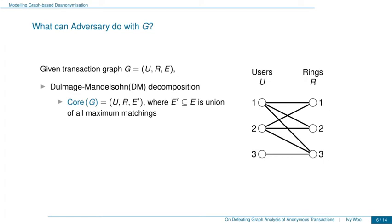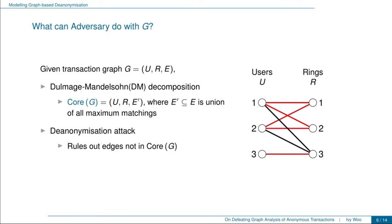So what can a graph-analyzing adversary do with a transaction graph G? We consider the DM decomposition, which decomposes G into two parts. The first part is called the core of G, denoted (U, R, E'), which is a subgraph of G where E' is the union of all maximum matchings in G; the second part is everything else. In the example on the right, the red edges are all edges in core(G). A graph-based de-anonymization attack is simply to rule out edges not in core(G), which cannot correspond to a true signer-signature assignment. For instance, since edges (1,3) and (2,3) are not in core(G), we conclude that user 3 must have been the real signer of ring 3. If G does not equal core(G), then some users will have decreased anonymity in the sense that their effective ring size is reduced.